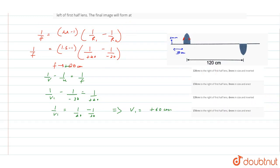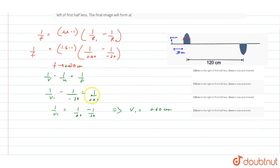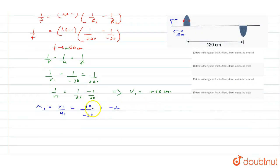So magnification, v1 by u that is minus 30, this will be minus 2. This will be our magnification m1.